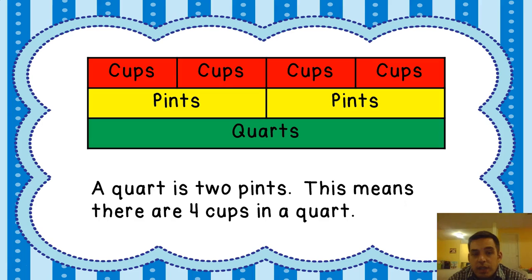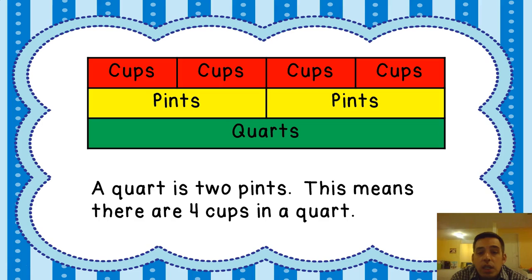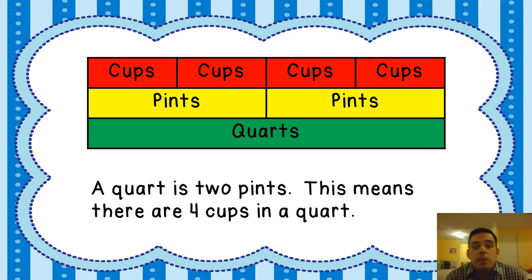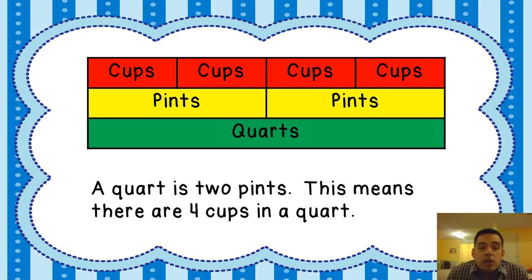The third unit is quarts. A quart is made up of two pints, so there are four cups in every quart. A quart is a pretty good size — it's 32 ounces. Those reusable water bottles your teacher might have, or that you use when you play soccer or basketball, that's usually a quart. If you go to the store and buy a larger bottle of Gatorade or sports drink, that's going to be a quart. Some folks can also buy ice cream in a quart size.